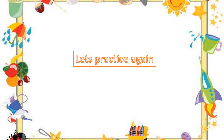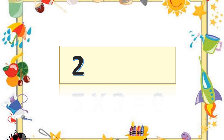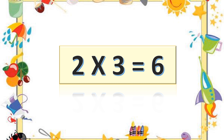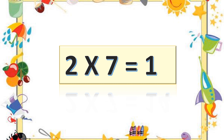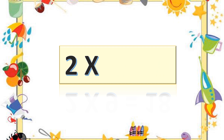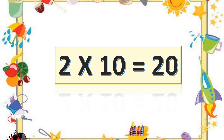Let's practice again. Two ones are two. Two twos are four. Two threes are six. Two fours are eight. Two fives are ten. Two fives are ten. Two sixes are twelve. Two sevens are fourteen. Two eights are sixteen. Two nines are eighteen. Two tens are twenty. Two tens are twenty.